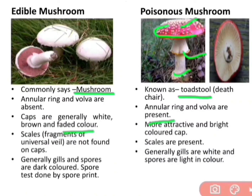Generally gills and spores of edible mushrooms are dark colored. In poisonous mushrooms, gills are white and spores are light in color. Spore ka color jaanne ke liye hum spore print technique ka use karte hain.